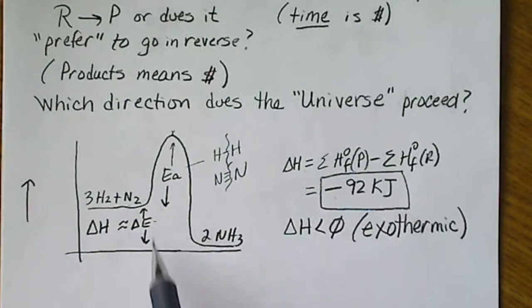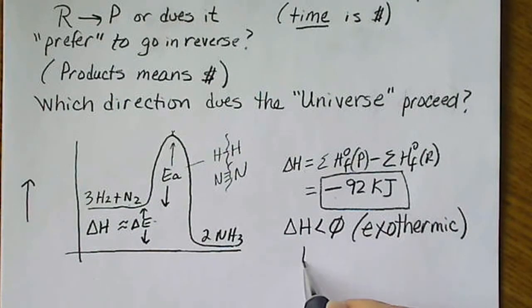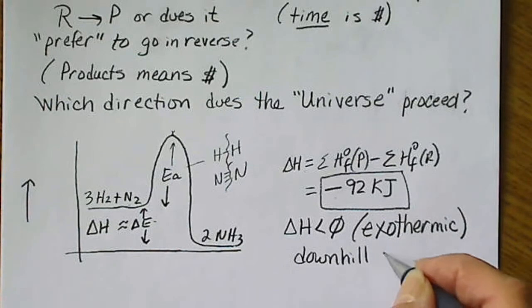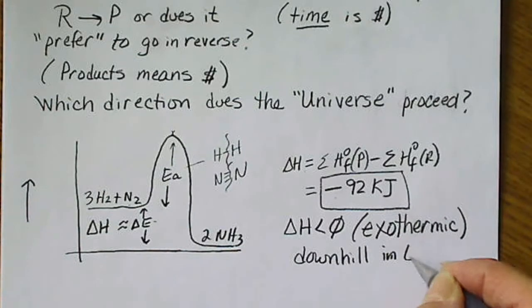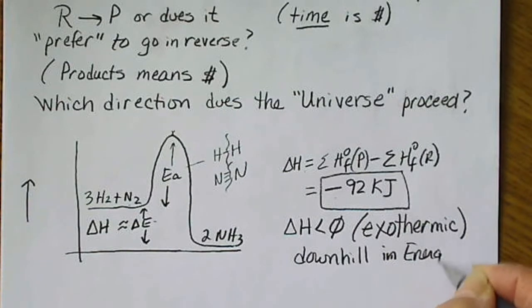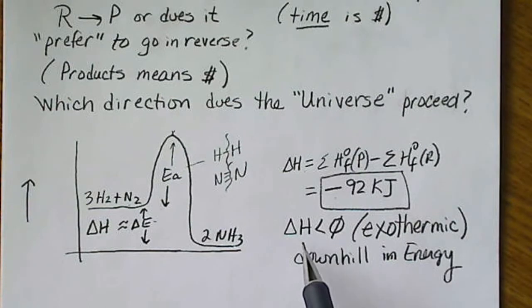And I always say this is going downhill in energy. So a negative delta H is downhill in energy. In this case, the energy that we're talking about is in the form of heat. And this is preferable.